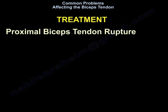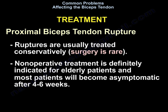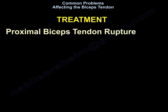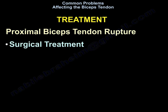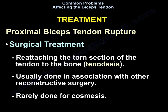Treatment: proximal biceps tendon rupture is usually treated conservatively; surgery is rare. For the elderly, treatment is non-operative. Most patients will become asymptomatic after 4 to 6 weeks. Conservative treatment consists of rest, ice, and physiotherapy. Surgical treatment consists of reattaching the torn section of the tendon to the bone — called tenodesis — usually done in association with other reconstructive surgery, and rarely done for cosmesis.